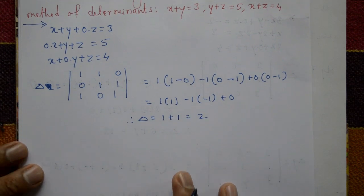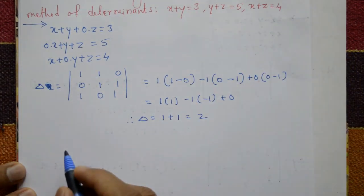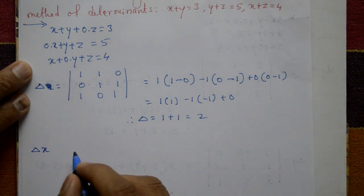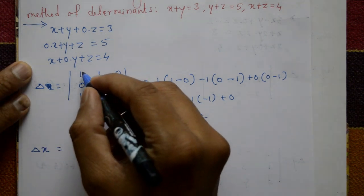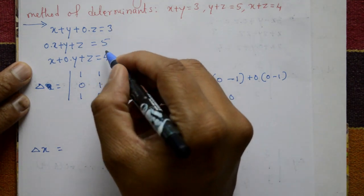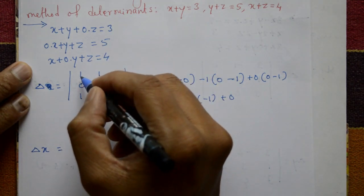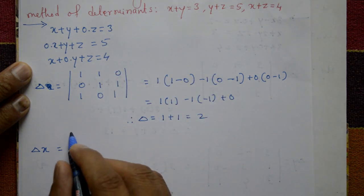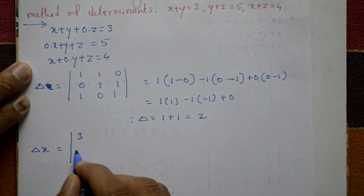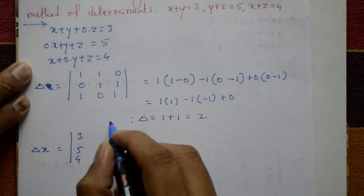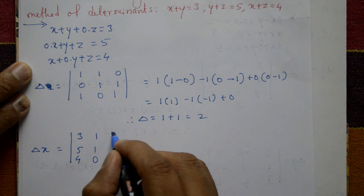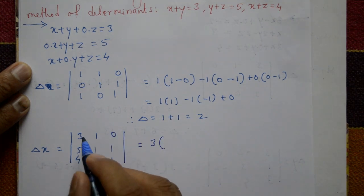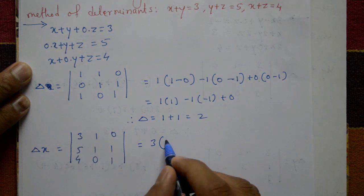Now find delta_x. For delta_x, substitute the constant terms 3, 5, 4 into the first column, keeping the second and third columns as they are. So delta_x is the determinant with first column 3, 5, 4 and remaining columns 1, 1; 1, 0; 0, 1.